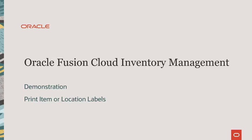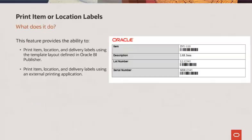This demonstration shows how you can use the print item or location labels feature to enhance your business. This feature provides the ability to print item, location, and delivery labels using the template layout defined in Oracle BI Publisher. Alternatively, you can print item, location, and delivery labels using an external printing application.